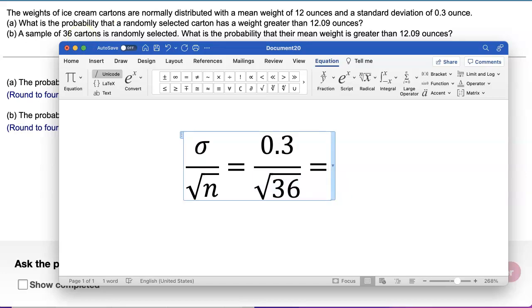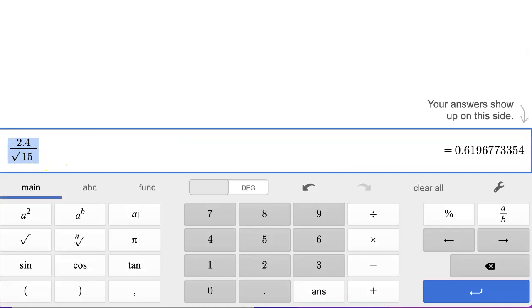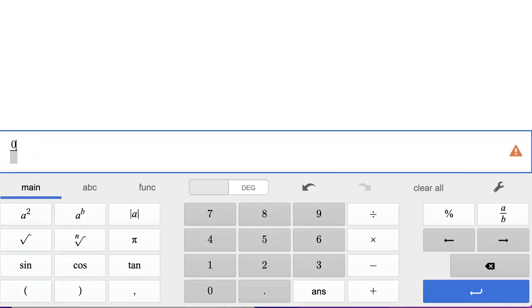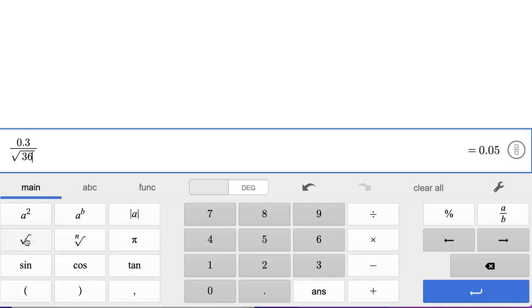On the graphing or scientific calculator, we're typing in 0.3 divided by square root of 36, and that number came out to be 0.05. That is the standard deviation for this sampling distribution of sample mean.